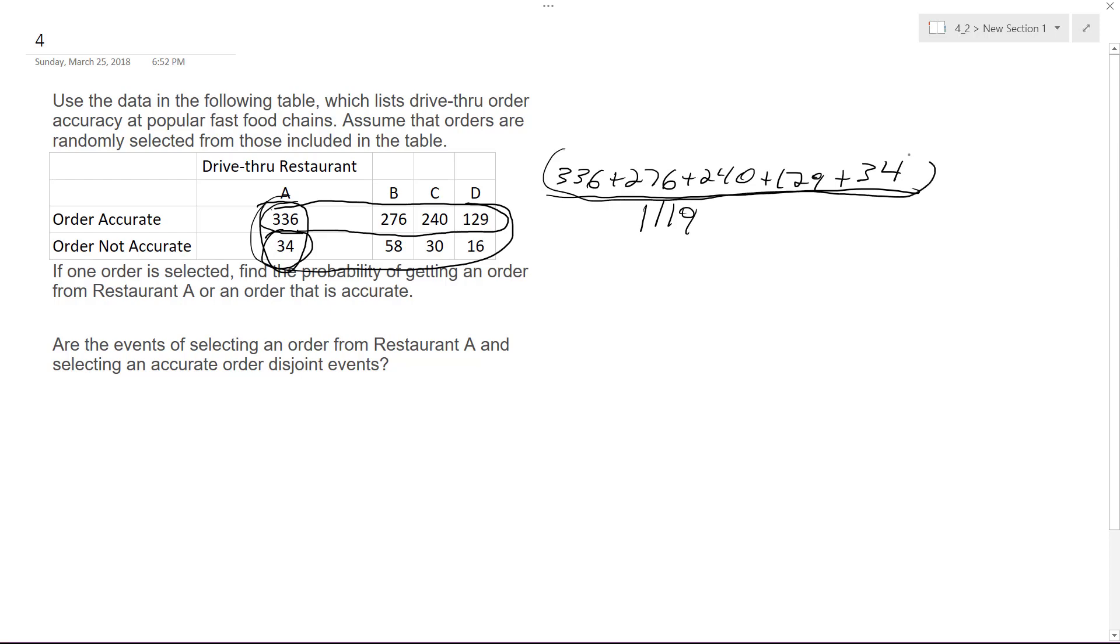So if you sum all these up right here on the numerator over all the numbers added together, which is 1119, we get 1015 over 1119, which is approximately equal to 0.90706.